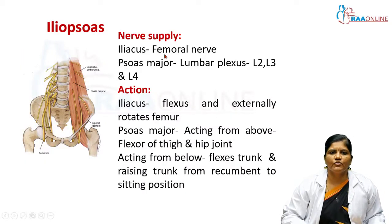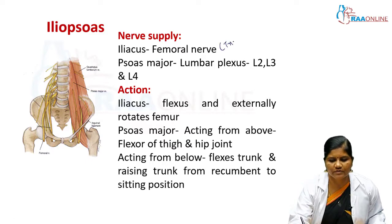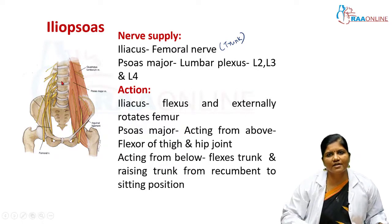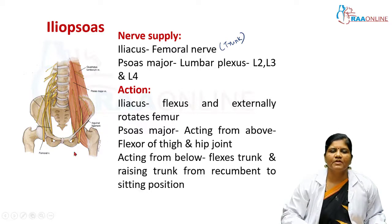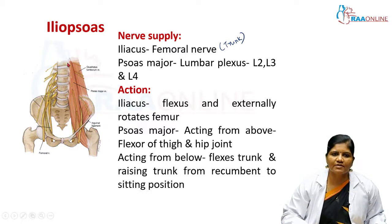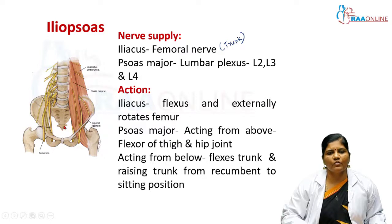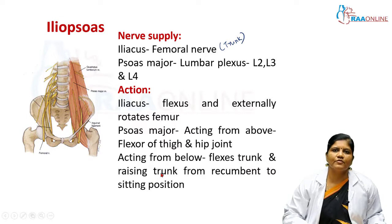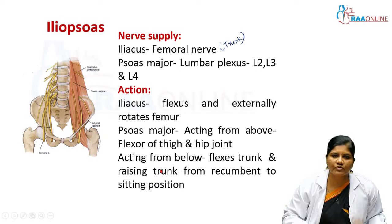The nerve supply: the iliacus receives supply from the trunk of the femoral nerve, while the psoas major receives direct branches from L2, L3, and L4. The iliacus flexes and externally rotates the femur. The psoas major connects the axial skeleton to the femur; acting from above it flexes the thigh and hip joint, and acting from below it flexes the trunk, raising the trunk from the recumbent to sitting position.